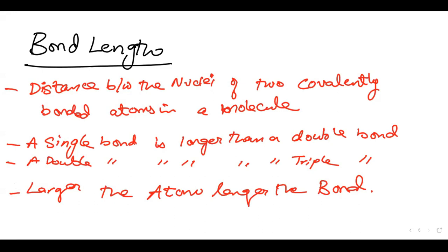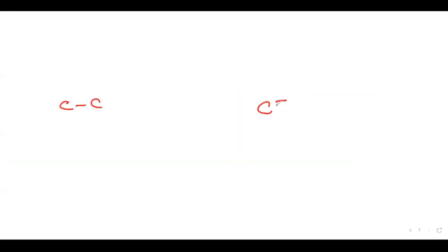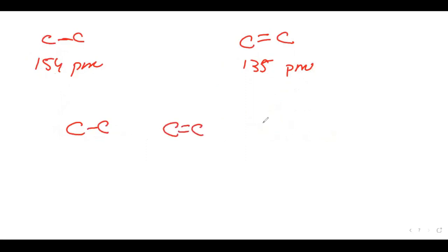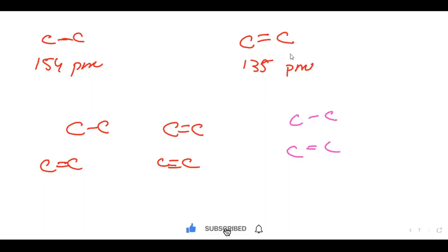For example, the C–C single bond length is 154 picometres, and the C=C double bond is 135 picometres. So you can compare which is bigger. The C–C single bond is longer than C=C double bond, which is longer than C≡C triple bond.